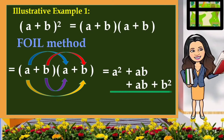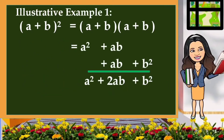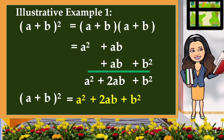Let's simplify. That is the same as a squared plus ab plus ab, which is 2ab, plus b squared. So the result of the square of the quantity a plus b, or (a plus b) times (a plus b), is a squared plus 2ab plus b squared. And that is a trinomial.